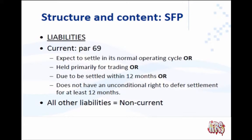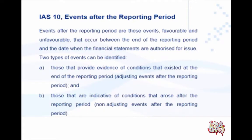For this video we are focusing on the specific rules found in paragraphs 72 to 76. IAS 10, which you know from first year, requires you to know when something is an adjusting or a non-adjusting event. We need to understand the link between IAS 1 and IAS 10 — when deciding how to present liabilities, we look at the conditions that existed at year end, integrating IAS 10 knowledge with IAS 1.